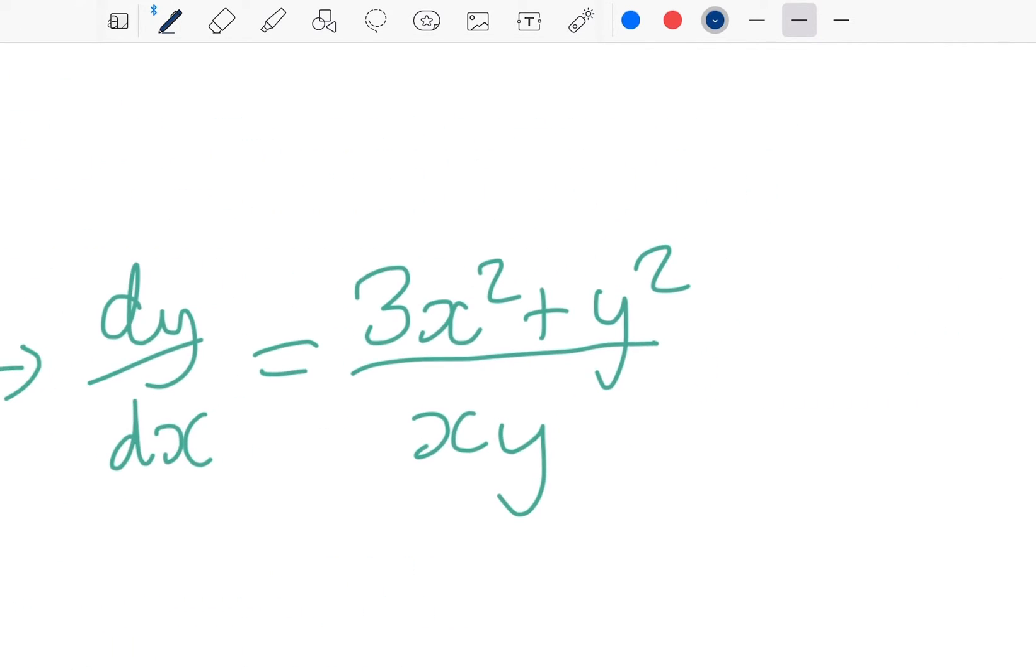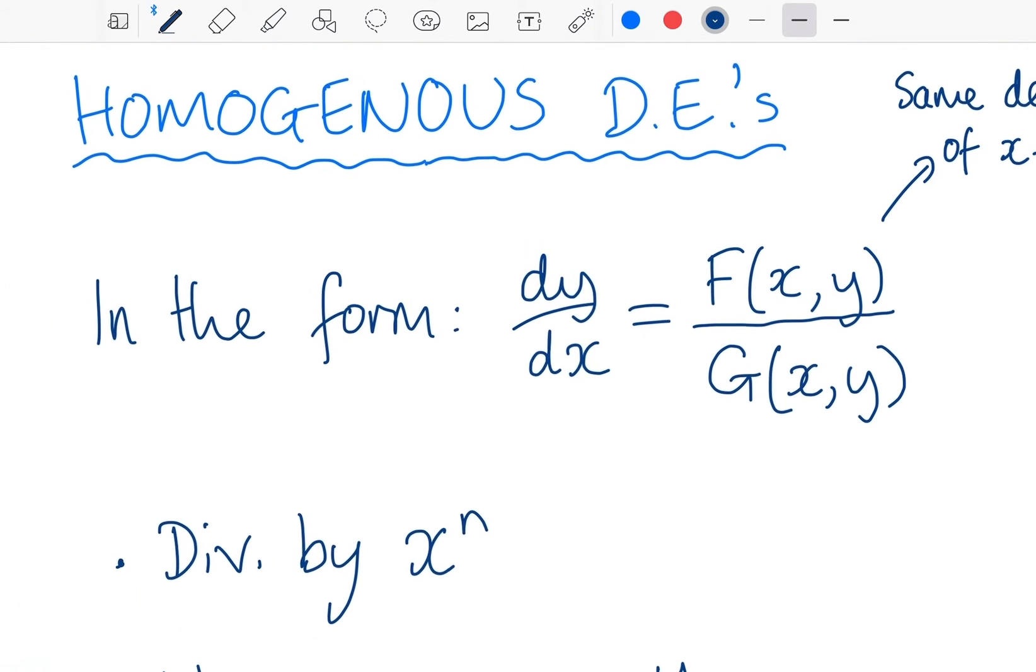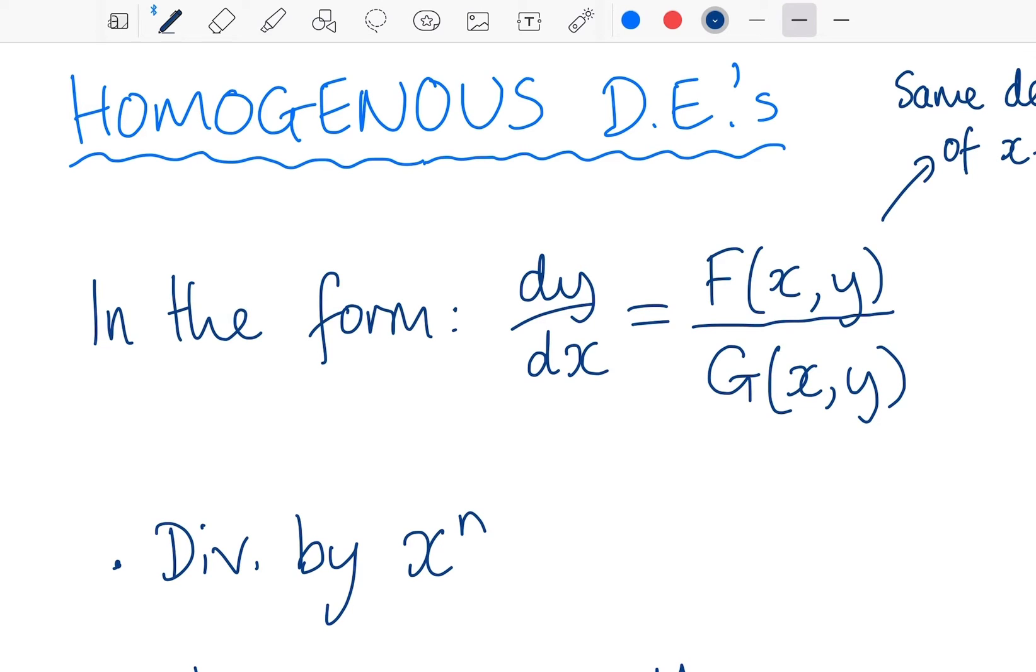For example this one here I have a power of 2, a power of 2, and I have 1 plus 1 on this term on the bottom so that would be a power of 2 as well. If I had a y cubed here then all of a sudden it wouldn't be in the correct form. So every term, if you added up the powers of x and y they would be the same every term on the top and bottom.